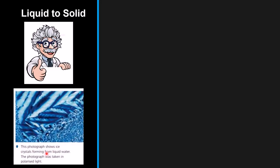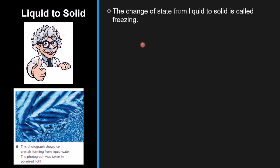Now let's talk about liquid to solid. I have added a photo here showing ice crystals forming from liquid water, taken in polarized light. The change of state from liquid to solid is called freezing. Freezing is the opposite of melting — the change from liquid to solid is freezing, while solid to liquid is melting.